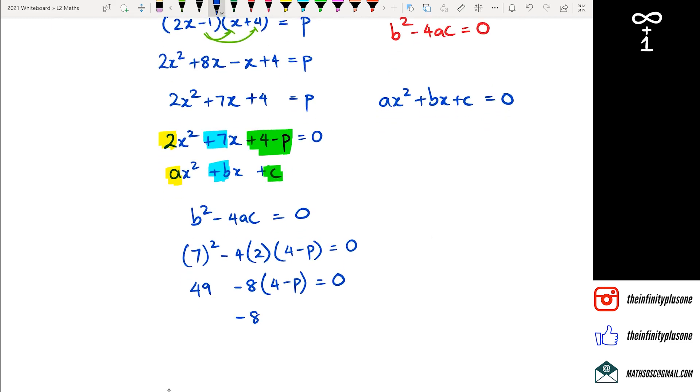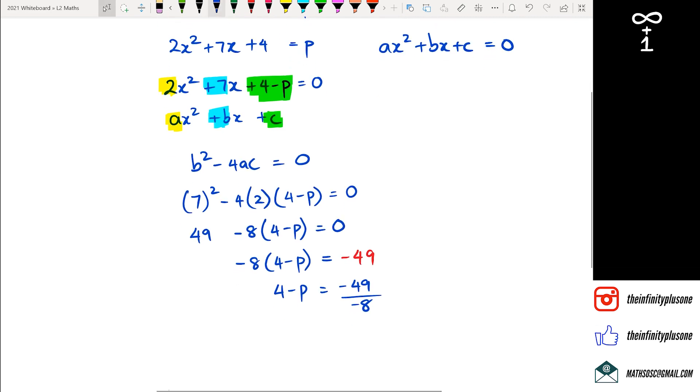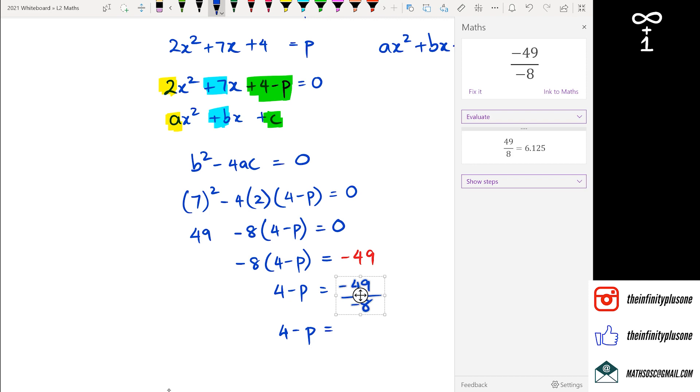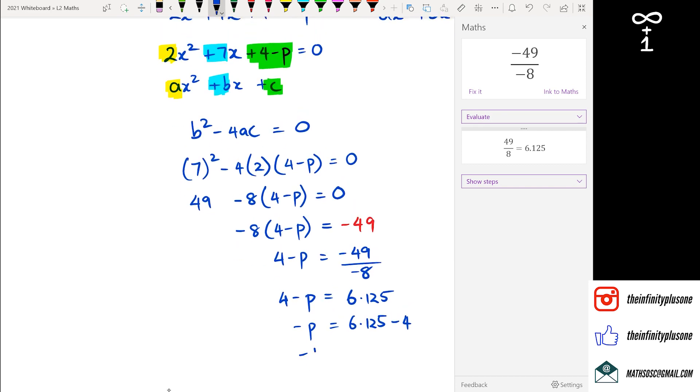I'm going to get rid of the 49 to the other side, which means I've got negative 49. And then I'm going to get rid of the negative 8. So I've got 4 minus p equals negative 49 divided by negative 8. And I've got 4 minus p equals, what is this? Yeah, I am liking this new little feature here, 6.125. So negative p is equal to 6.125. Take away 4.